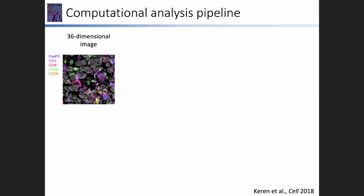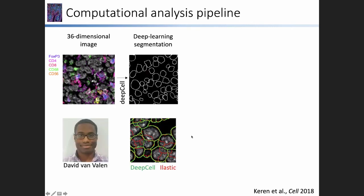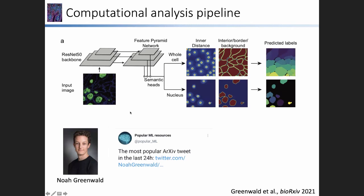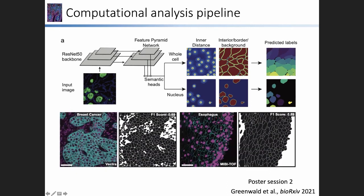We put together a computational analysis pipeline starting from the 36-dimensional image. We then perform deep learning segmentation to identify cells in the image — a huge shout out to our collaborator David Van Valen from Caltech, who built the DeepCell segmentation platform. Recently, Noah Greenwald together with the Van Valen lab released a new algorithm called Mesmer on the DeepCell platform, which does whole cell segmentation and does a really good job of segmenting tissue images. I highly recommend checking out that platform.